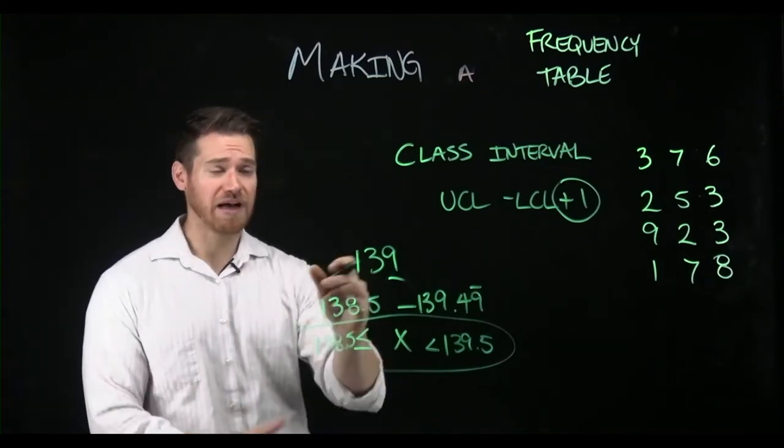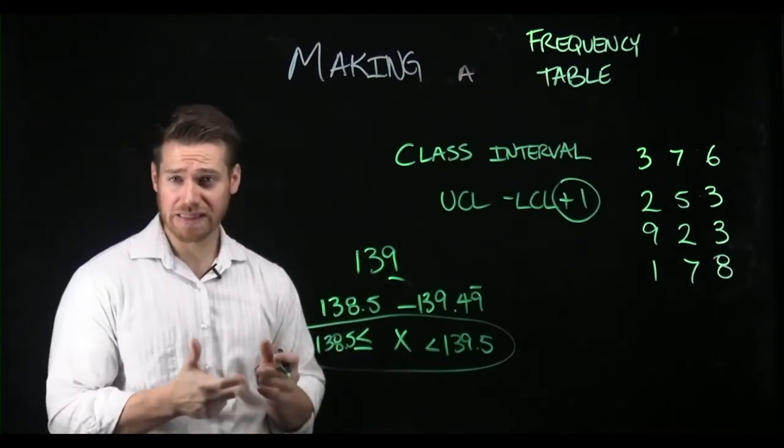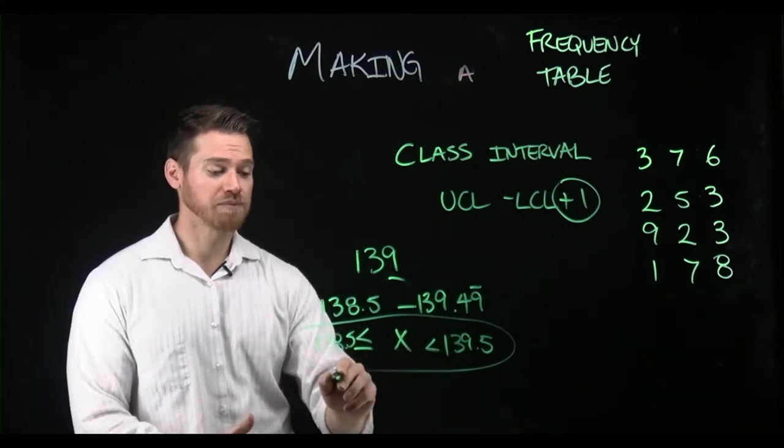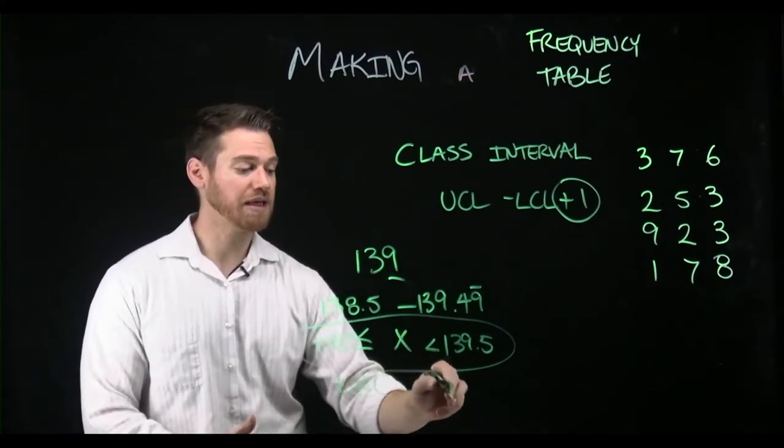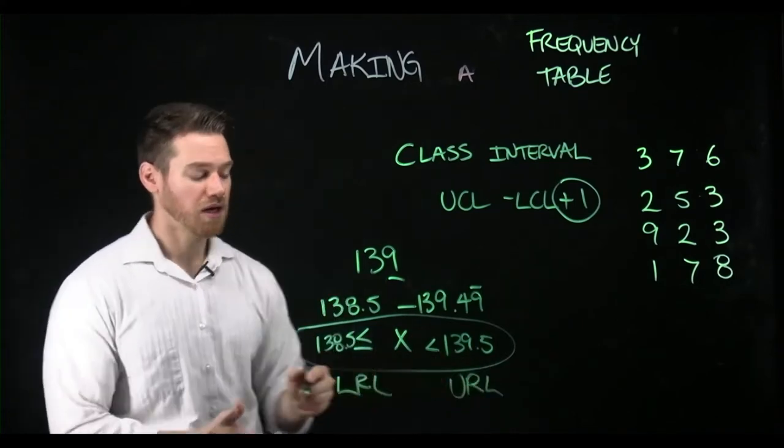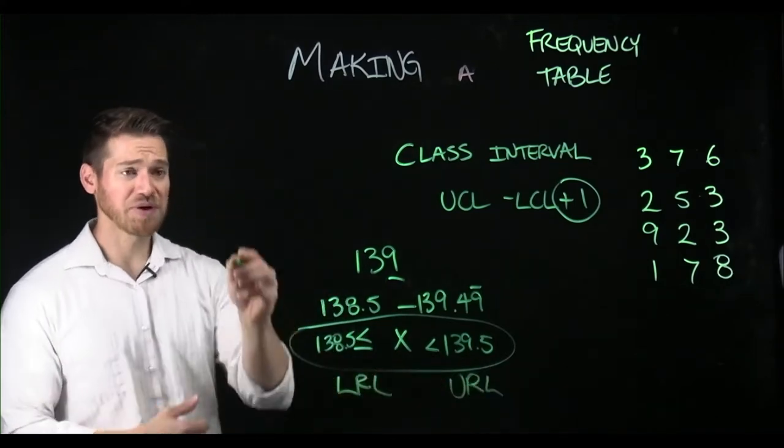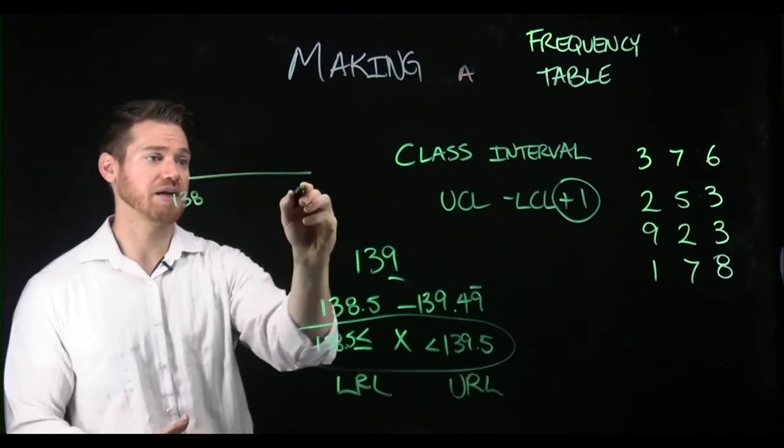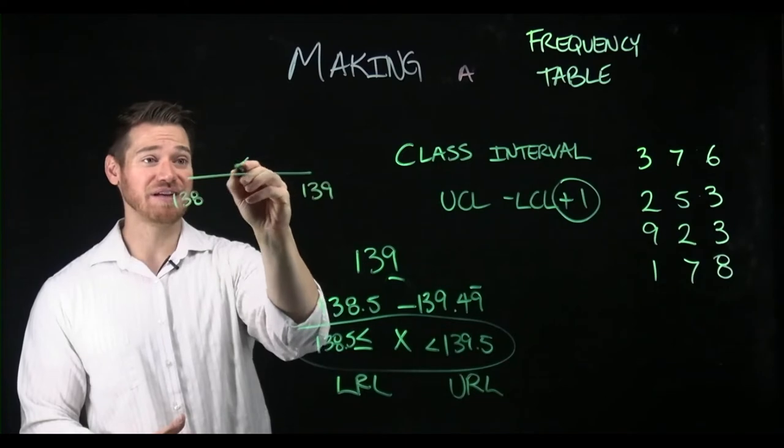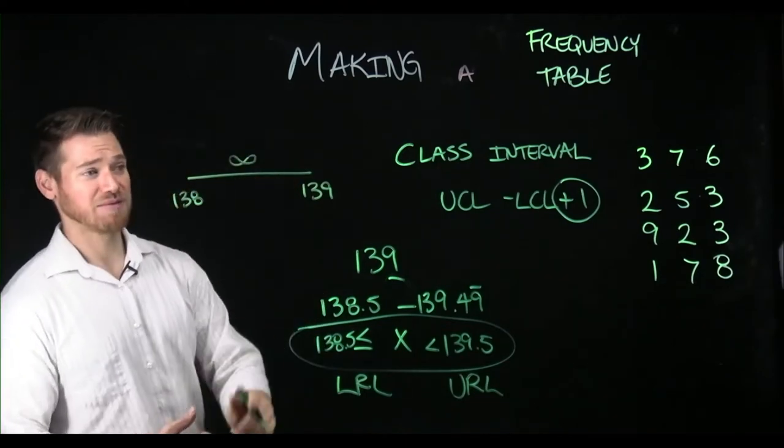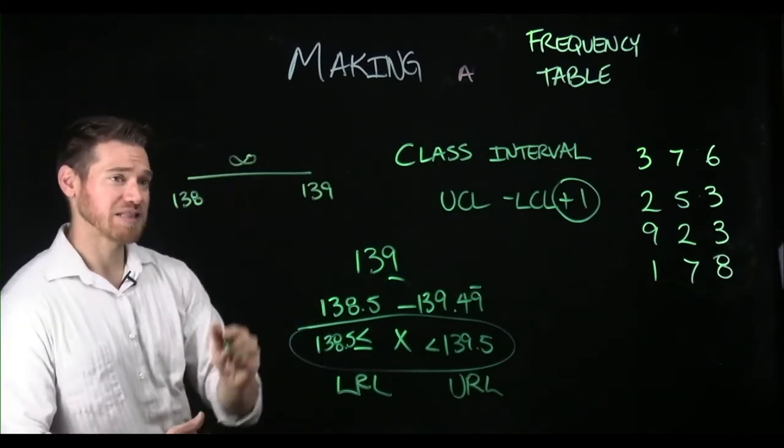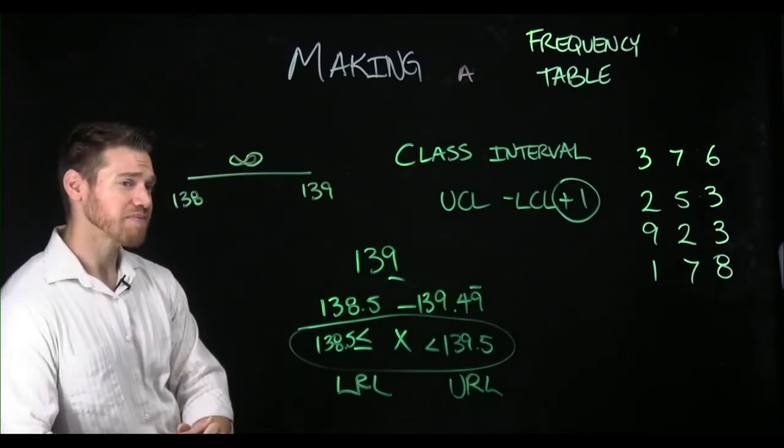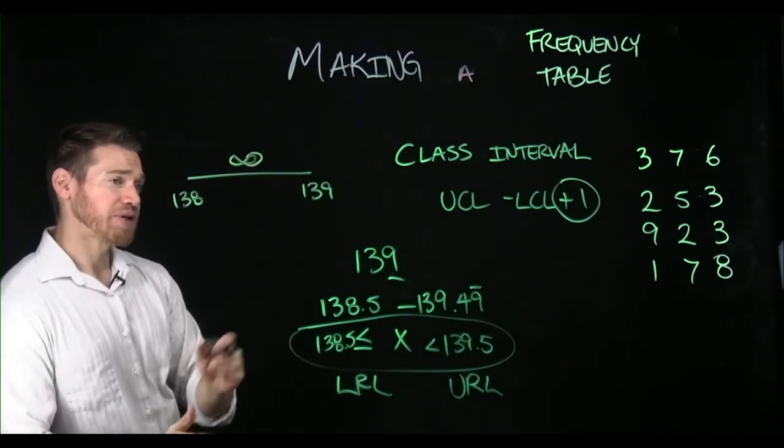We just aren't measuring that precisely, and so these are what we consider the lower real limit and the upper real limit on this value. Remember numbers exist on a number scale, so how many numbers exist between 138 and 139? There's actually an infinite number of possible values that could live in that space. It's just how precise do you measure, and so these real limits are part of the reason.